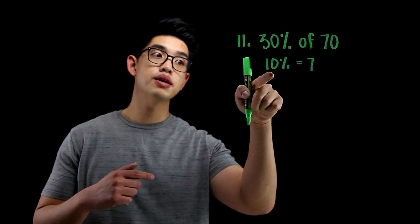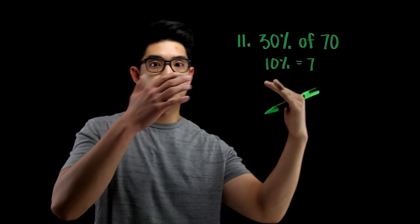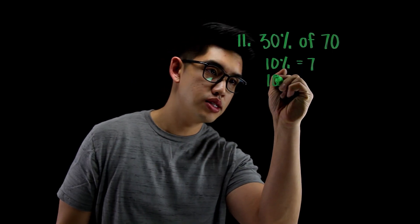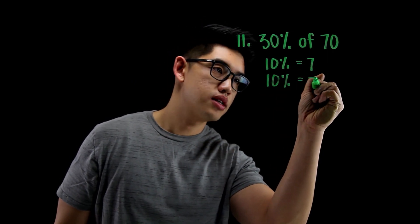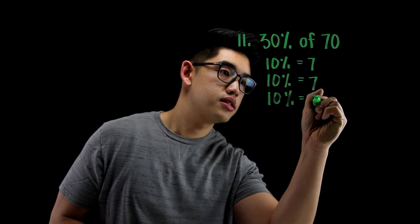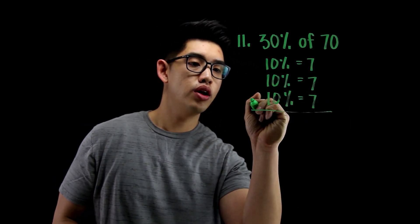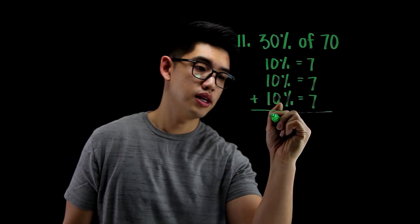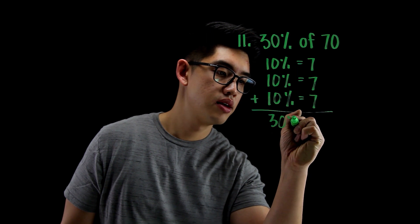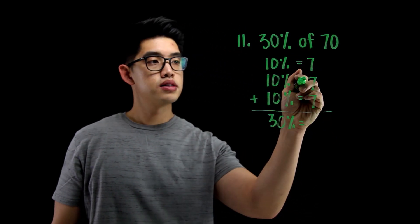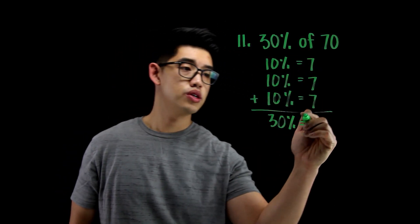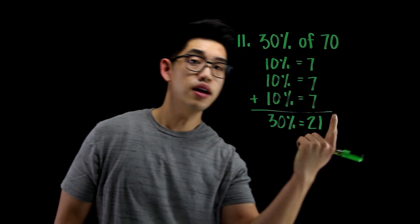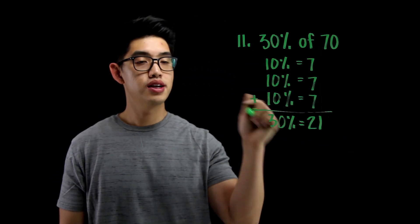But I don't want 10%, I want 30%. I got to triple that. So I want to write 10%, that's going to equal 7. I need another 10%, I'm going to add that in, that's 7. If I add them all up, 10% plus 10% plus 10%, that's 30%. You can write 30%. And then 7, 7, 7, 7 times 3 is 21. And that's my answer. 30% of 70 is 21.